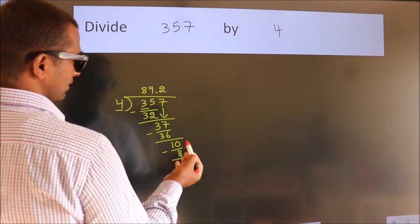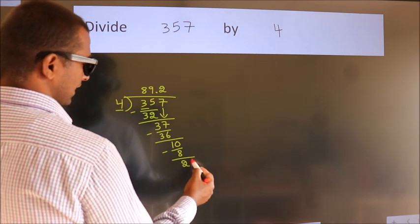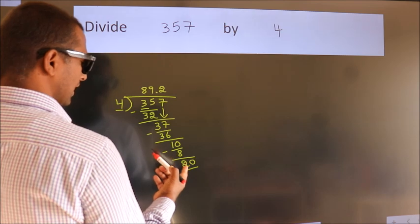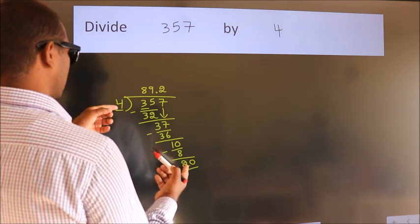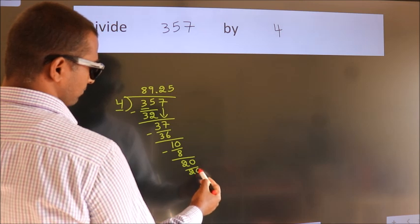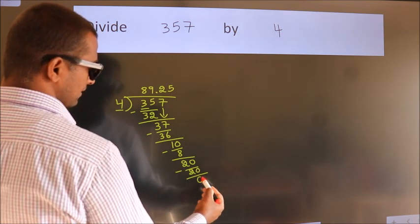After this, we already have the decimal, so directly take 0. So 20. When do we get 20 in the fourth table? 4 times 5 equals 20. Now we subtract. We get 0.